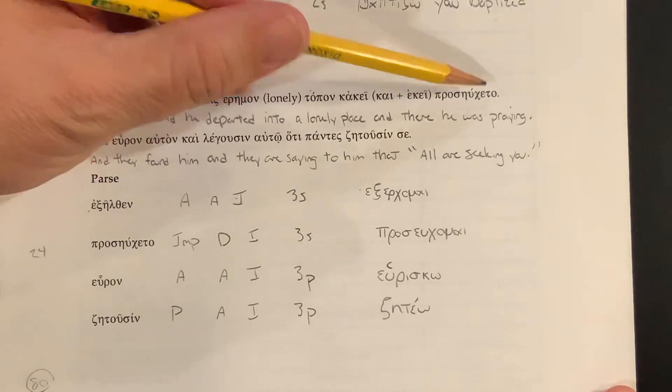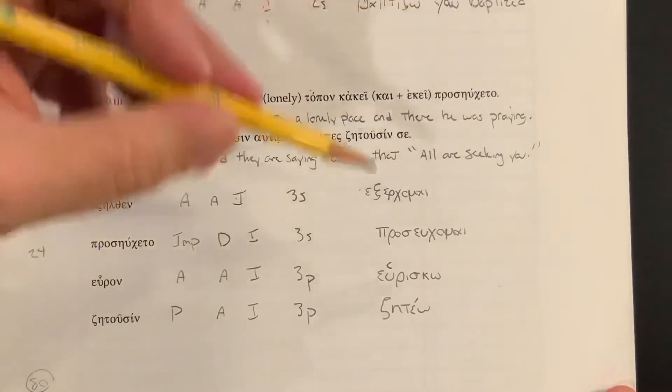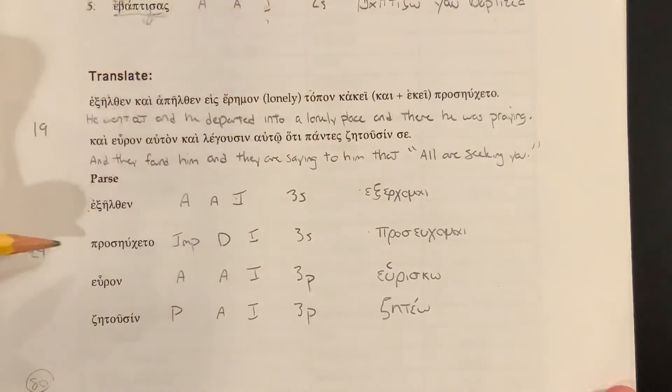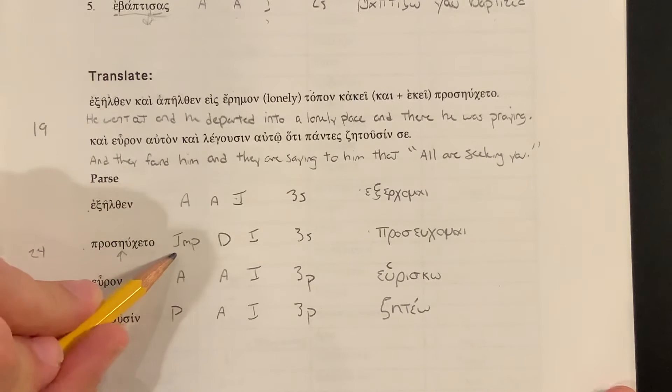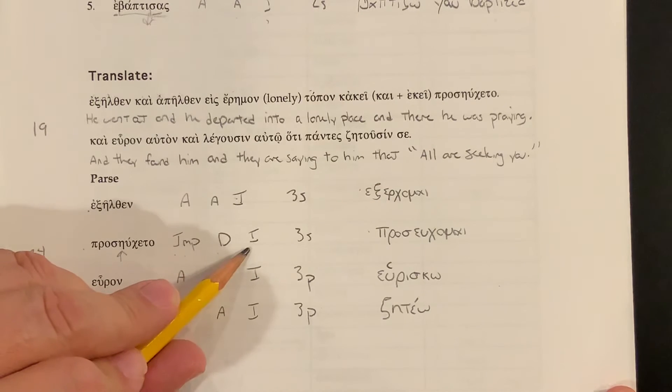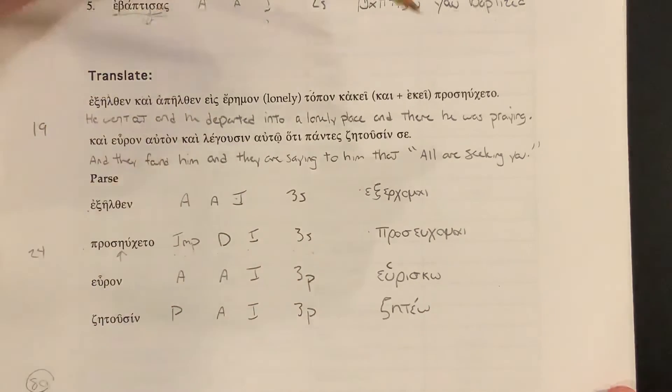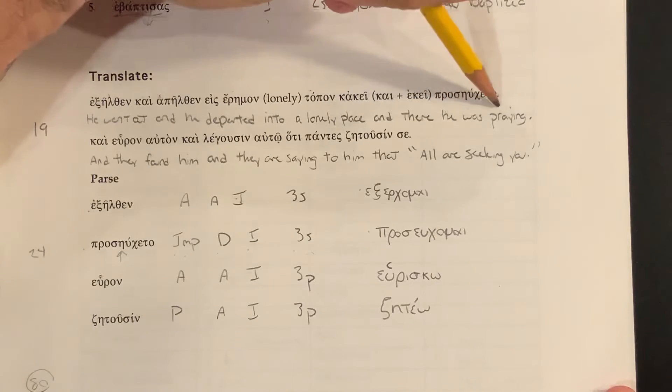Proseukheto. Proseukheto. Now, proseukheto is proseukhomai. And proseukhomai, if we go down here to our parsing, we can see an augment on there, but it is not an Aorist. This is an imperfect. Proseukheto, it's an imperfect, middle-only or deponent, indicative, and is a third singular. And so the way we inflect it is he was praying.